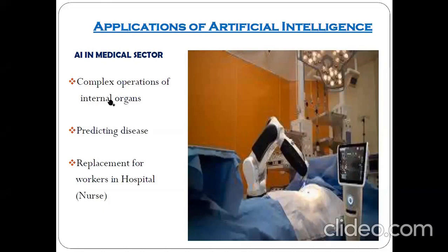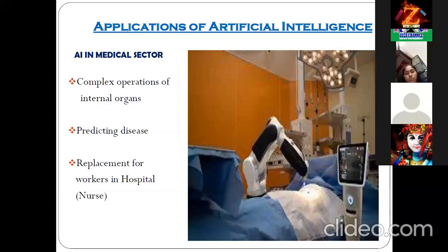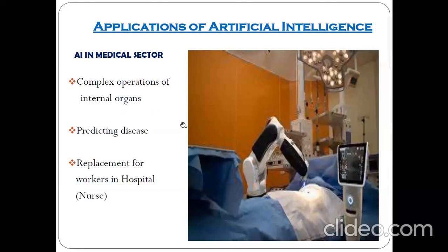Even a doctor is a human being — he is also having emotions. Many operations fail only because the doctor could not control their emotions during such complex operations. But a robot has no emotions — it can do it more precisely and correctly. Experiments are going on on these things.